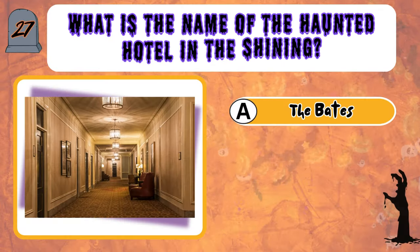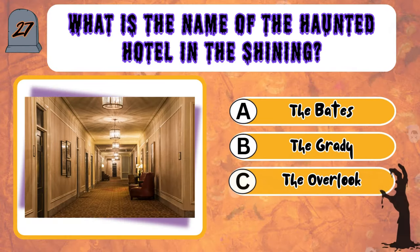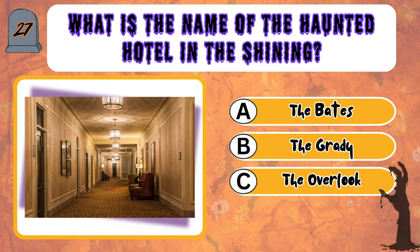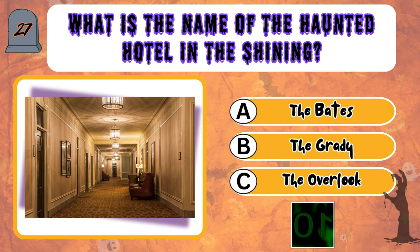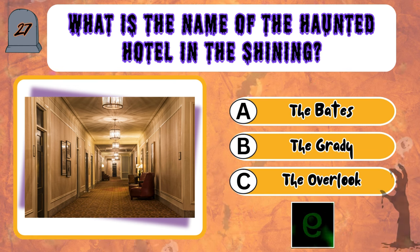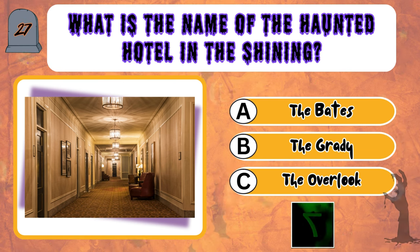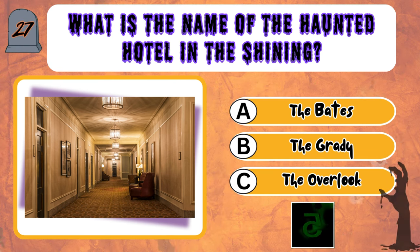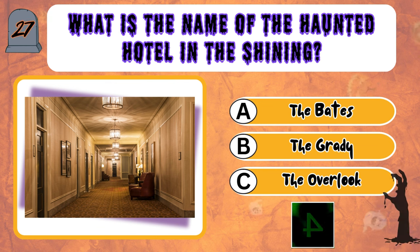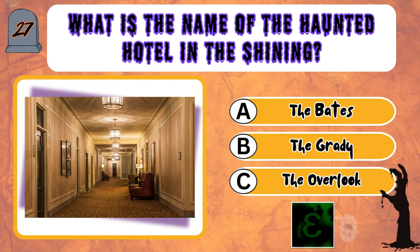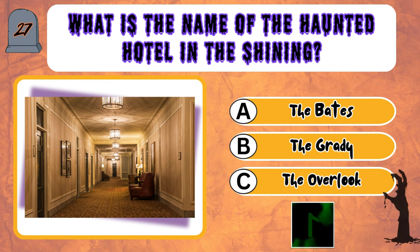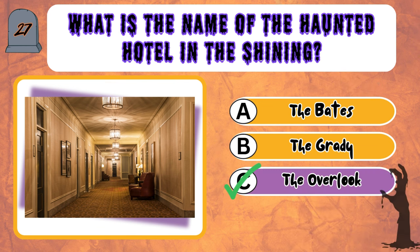What is the name of the haunted hotel in The Shining? A, The Bates. B, The Grady. C, The Overlook. The answer is C, The Overlook.